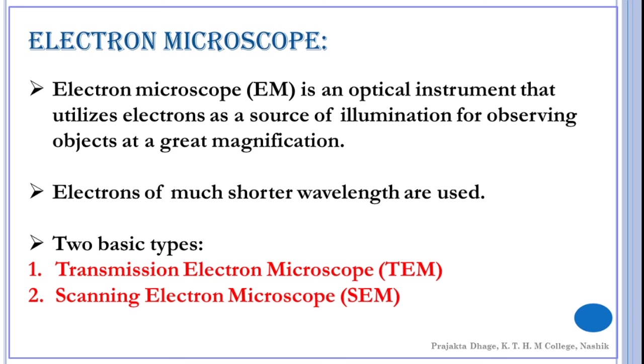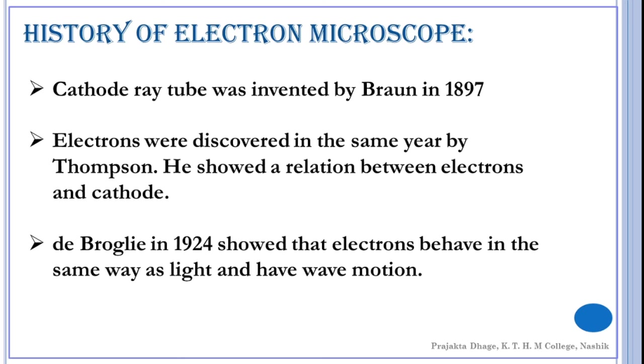There are two types of electron microscopes. The first is transmission electron microscope and the other one is scanning electron microscope. Let us move on to the history of electron microscopes. Many scientists worked on the advancements of the electron microscope and finally led to the advent of it. It is a product of many inventions and discoveries that happened in physics.